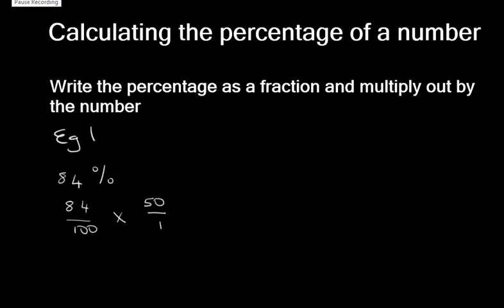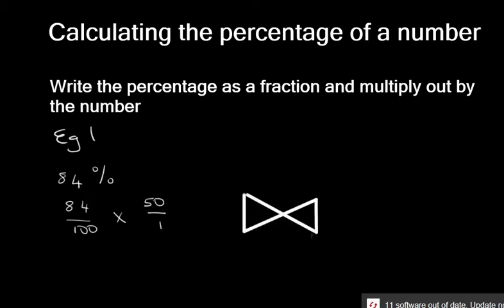You need to write the percentage as a fraction. A percentage is always a number over 100. So 84 over 100. The test was out of 50, so it's 84 over 100 times 50 over 1. Remember we spoke about canceling in the bowtie method? You can cancel down and across. 50 goes into itself once and 50 goes into 100 twice. That leaves us with 84 divided by 2, which gives us 42. This is the mark you got out of 50. 42 out of 50 is 84%.